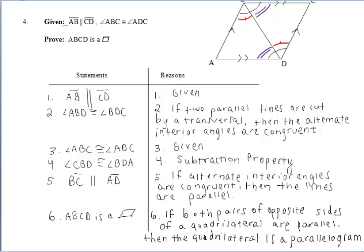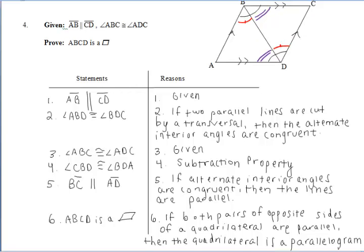We can then say that the quadrilateral is a parallelogram because of the first reason we talked about, which states that if both pairs of opposite sides of a quadrilateral are parallel, then the quadrilateral is a parallelogram.